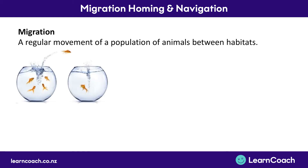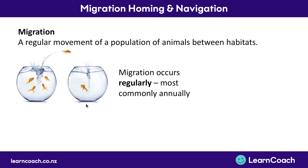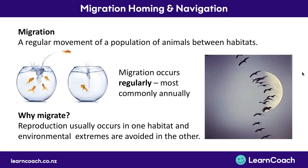Migration is a regular movement of a population of animals between two different habitats. This happens regularly — most commonly every year, but sometimes once in a lifetime. Lots of populations of animals do it, usually because reproduction occurs in one habitat and there are environmental extremes they want to avoid in the other, like it getting really cold or there not being much food.